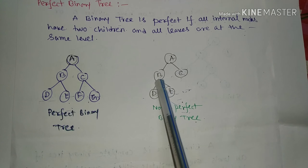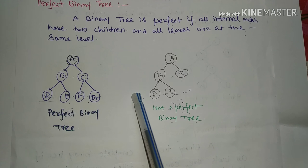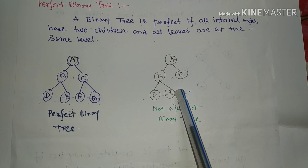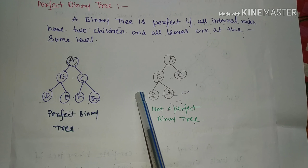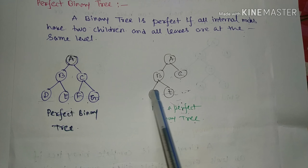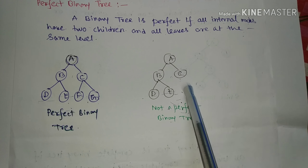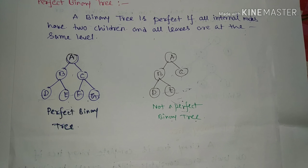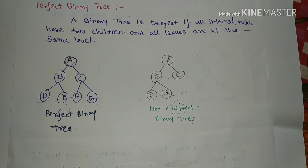This tree is not a perfect binary tree because all leaves are not at the same level. So it is not a perfect binary tree.